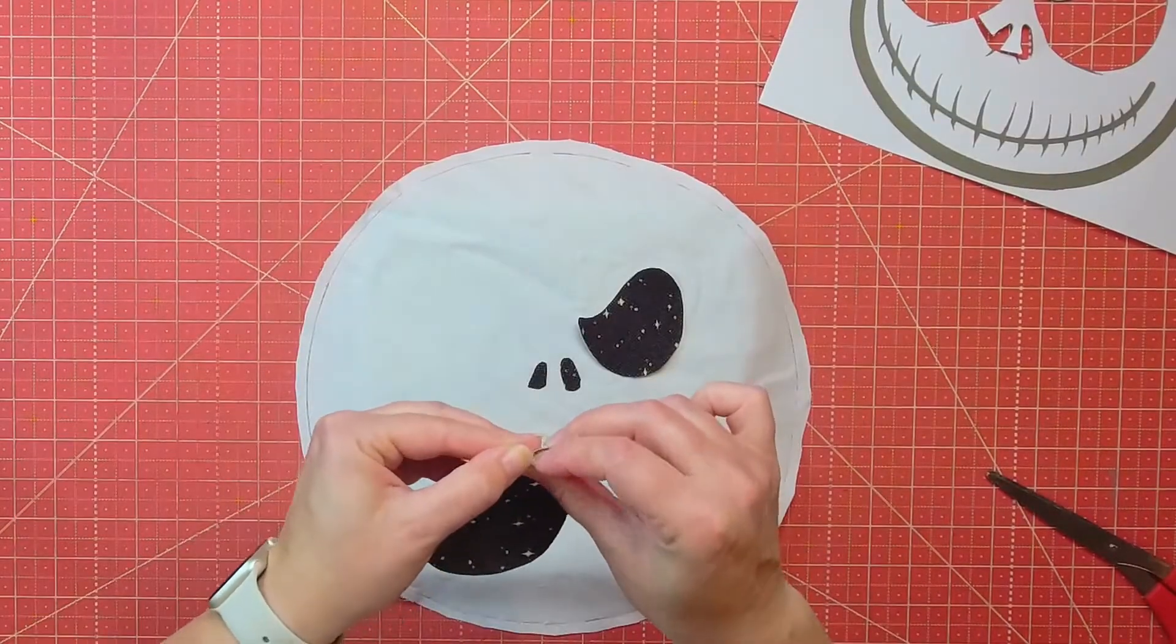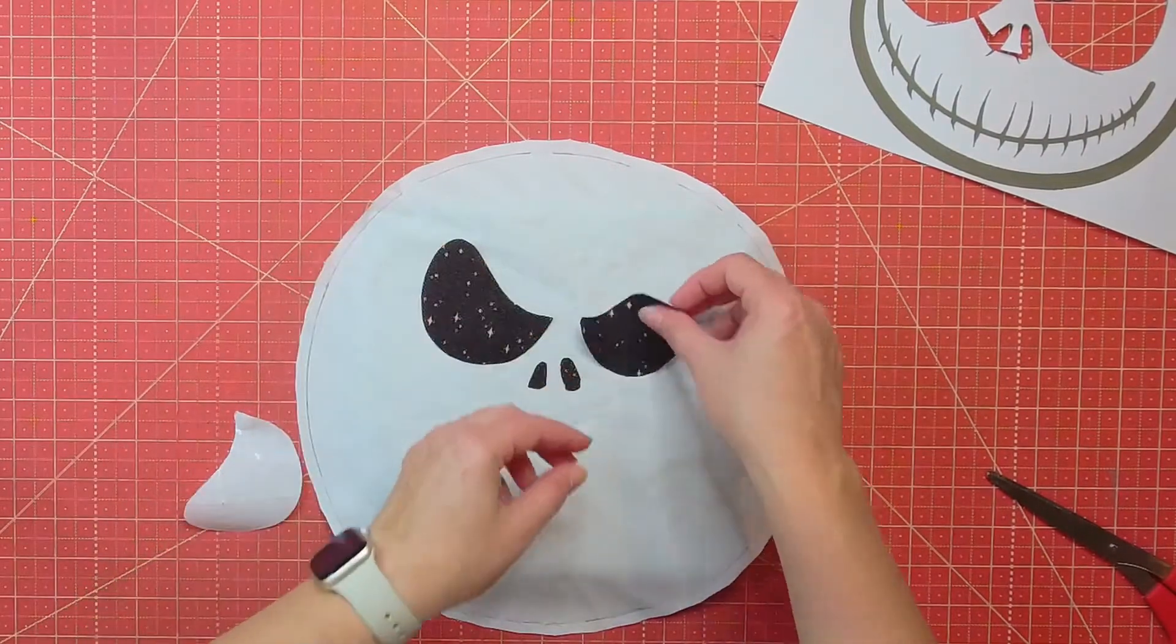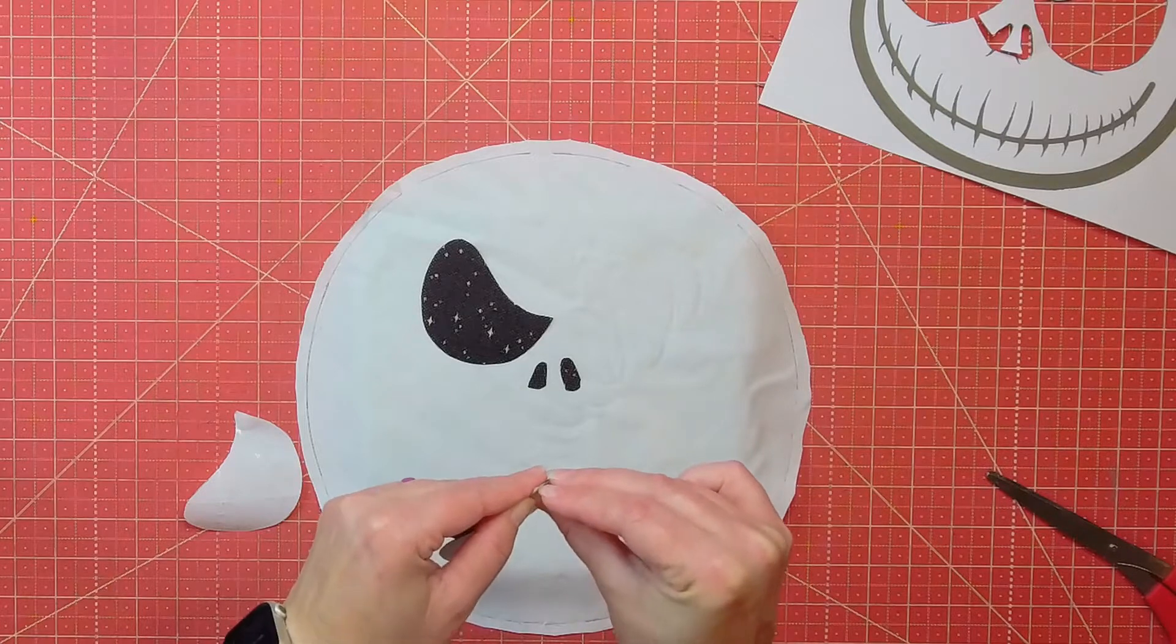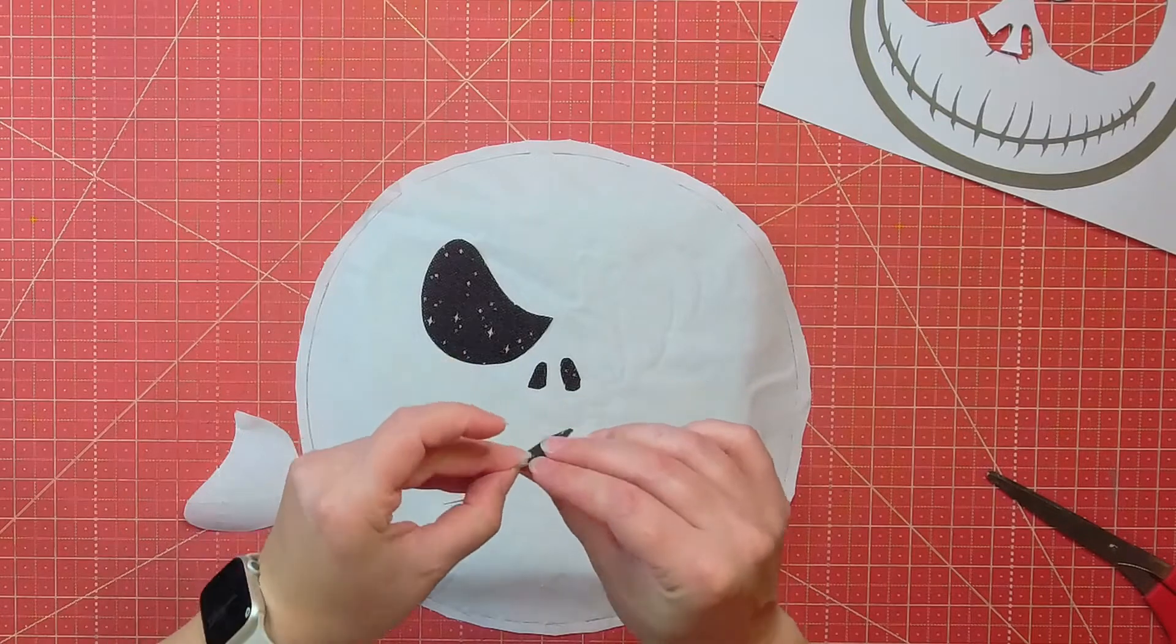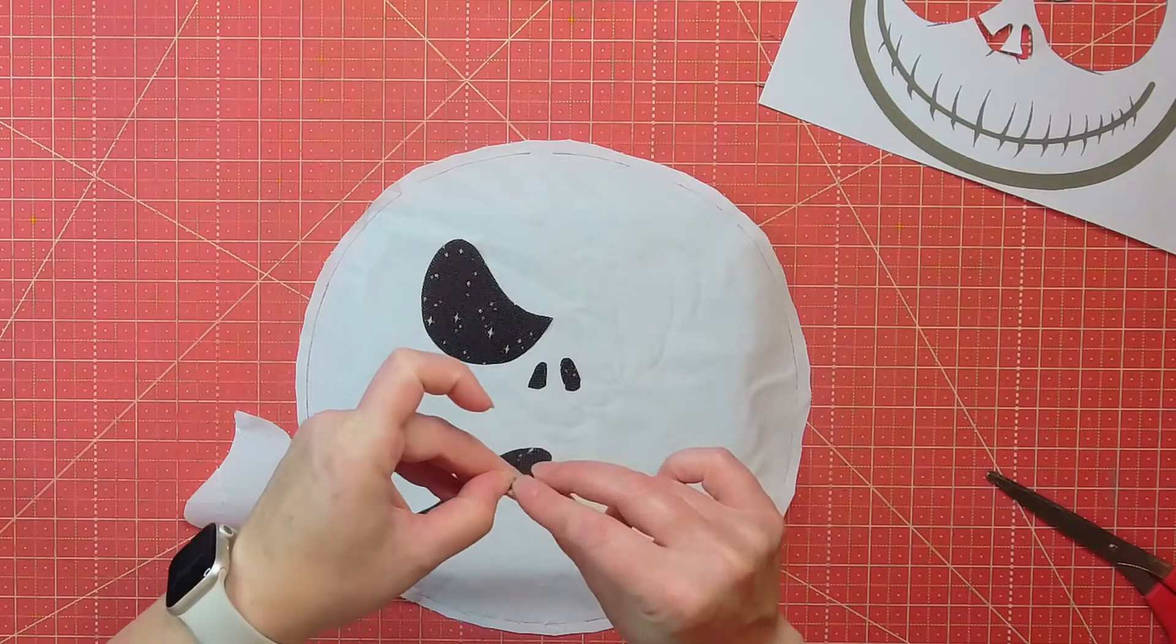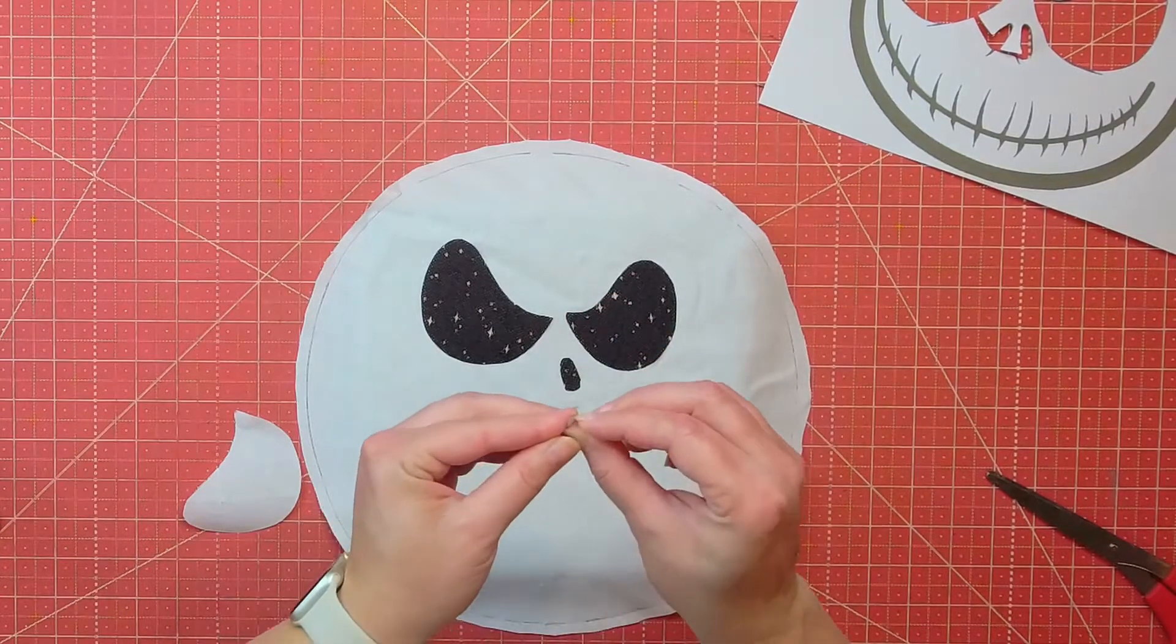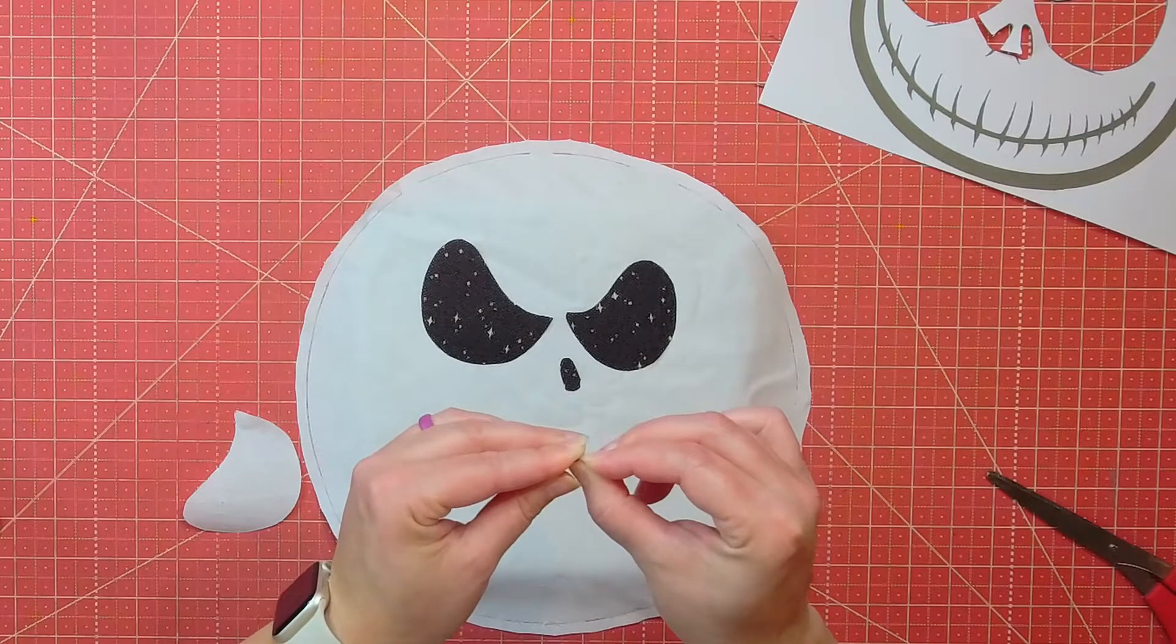All right. So now you're just going to remove the paper off of the back of the heat and bond. And after I remove the paper from all the pieces, I'm just going to lay them out and get them in a position that I like. This paper can be hard to remove. It's very, very tricky. It's probably the hardest part of this entire project, honestly. Let me know in the comments if you struggle with removing the paper off the back of these heat and bond products. We can all commiserate together on this part.